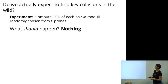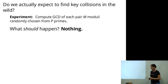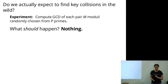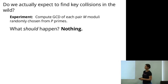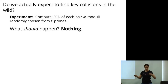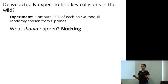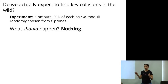Whether you expect two RSA moduli to collide with a shared factor — if we take all RSA moduli collected from the internet and compute GCDs of each pair, for randomly generated realistic RSA keys the probability of a collision is essentially nothing.